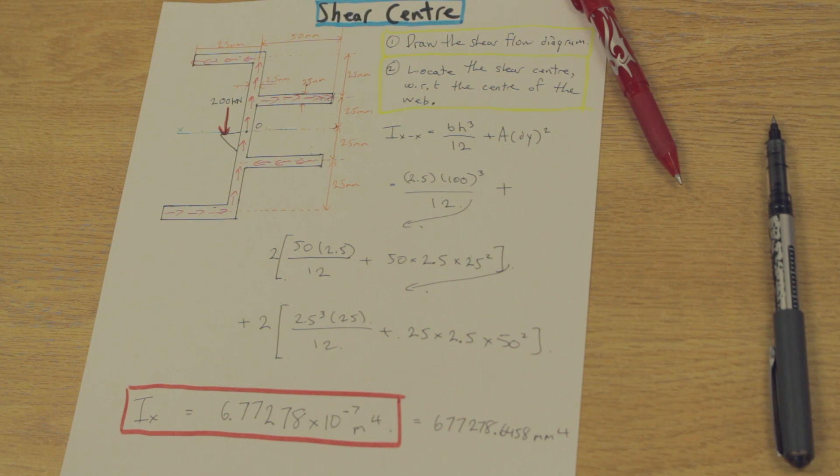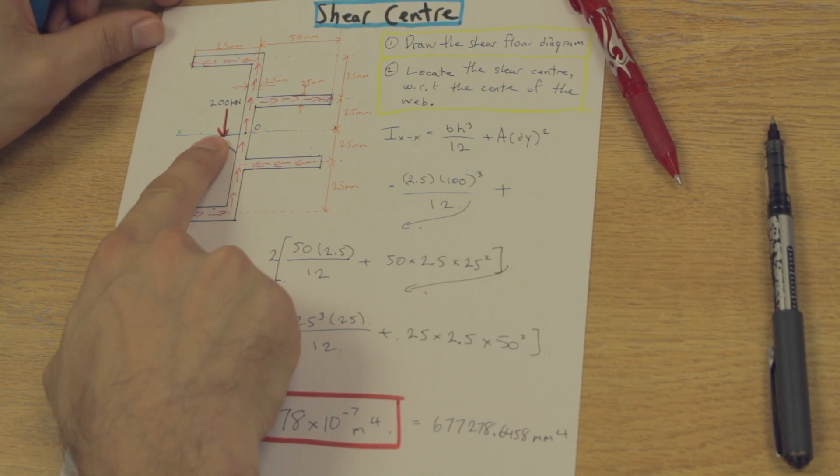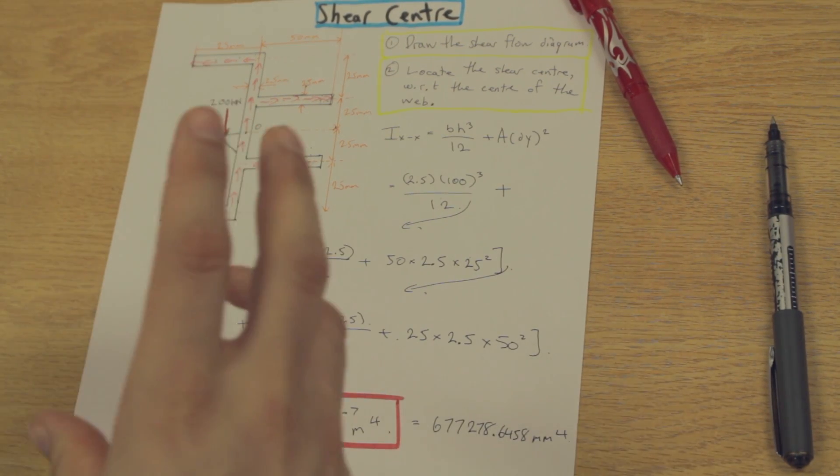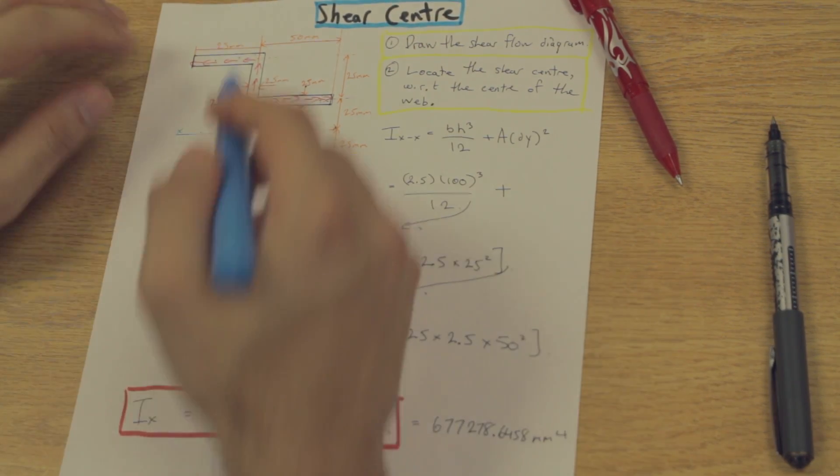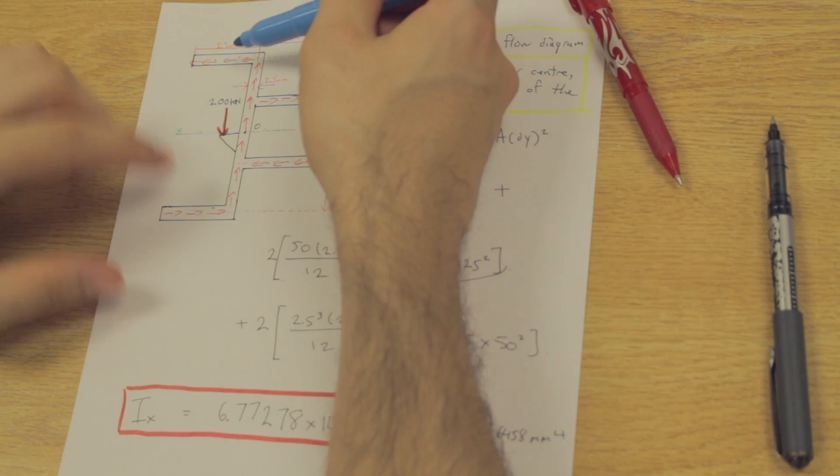So this shear flow, this shear force here acting, which is given in the question, which is 200 kilonewtons, it creates a couple moment between the different flanges. So in this case, we're going to have a force here and a force here.